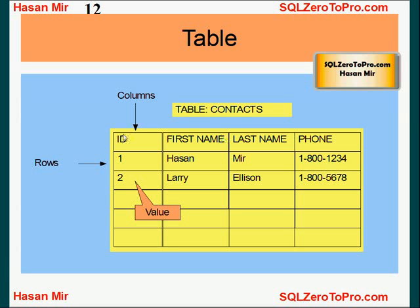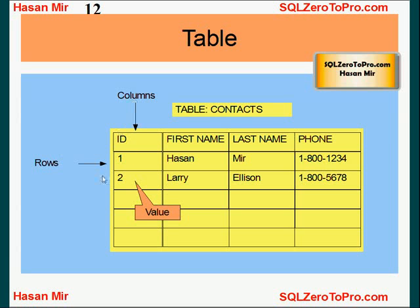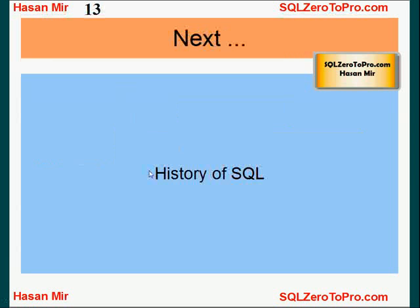Usually we include an ID column in each table so that each record can be uniquely identified. We can have two people with the same first name, last name, and perhaps the same phone number, so that's not a good identification. A combination of first name and last name is not unique identification. So usually IDs are used — they are sequentially incremented. The intersection of a row and column is a value. That's how a table looks, and data basically resides in a table. You write SQL statements to retrieve data, put data in, modify data, and delete data.